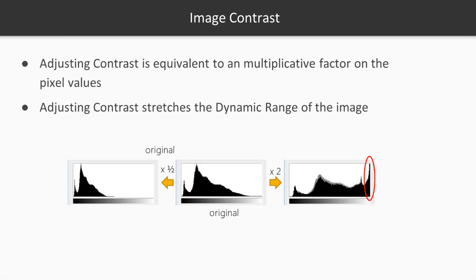Contrast is a multiplicative operation, so image contrast is adjusted by multiplying image pixel values by some factor. This has the effect that darker pixels are less affected by the multiplication than lighter pixels, which have higher values.